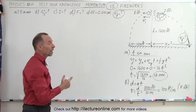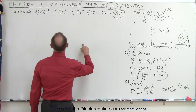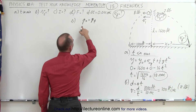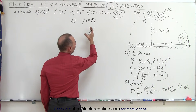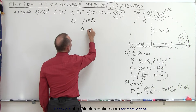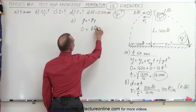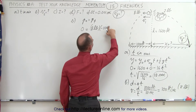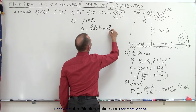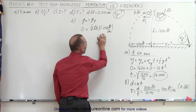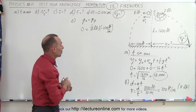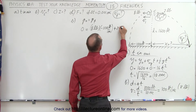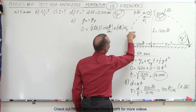Now let's calculate the velocity for the two-pound piece using conservation of momentum. P-initial equals P-final. The initial momentum before the explosion is zero. The momentum after the explosion is eight pounds times negative 100 feet per second — negative because it goes to the left — plus the two-pound piece times v2, which is the velocity to the right.